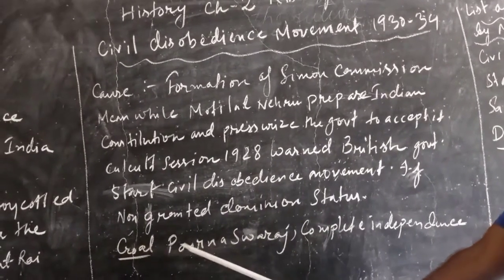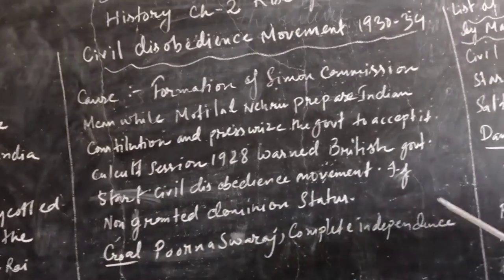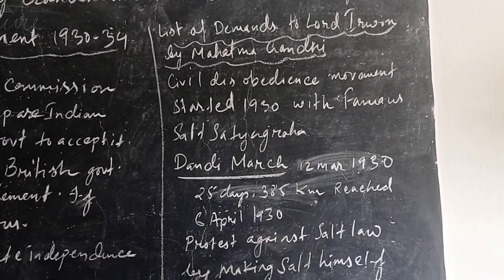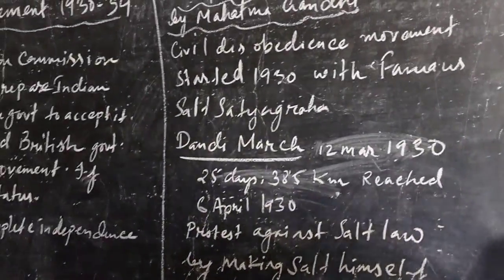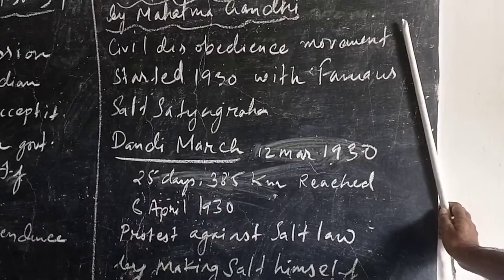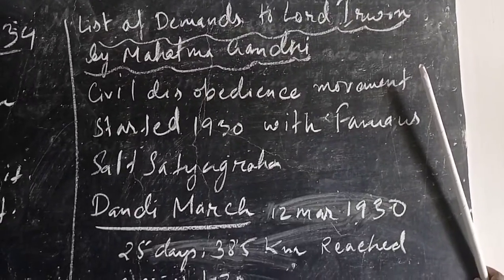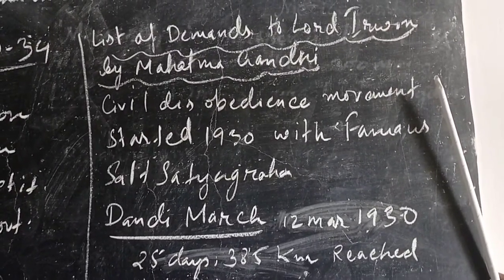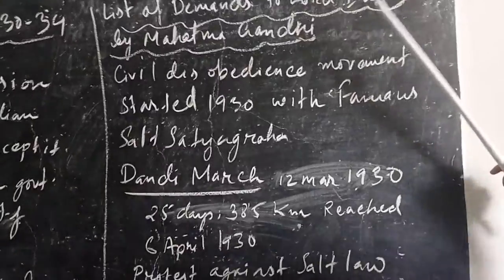Their main goal was complete independence for India. Along with it, a list of demands was given to Lord Irwin by Mahatma Gandhi. Those demands included: prohibition of the use of intoxicants, changes in the ratio of rupees and sterling, reduction of land revenue, abolition of salt tax, reduction of military expenditure, reduction of expenditure on civil administration, imposition of custom duty on foreign clothes, acceptance of the postal reservation bill, abolition of the Crime Investigation Department, and release of all political prisoners.